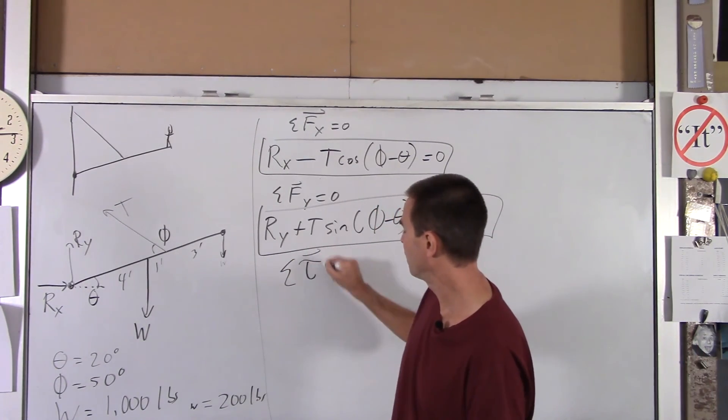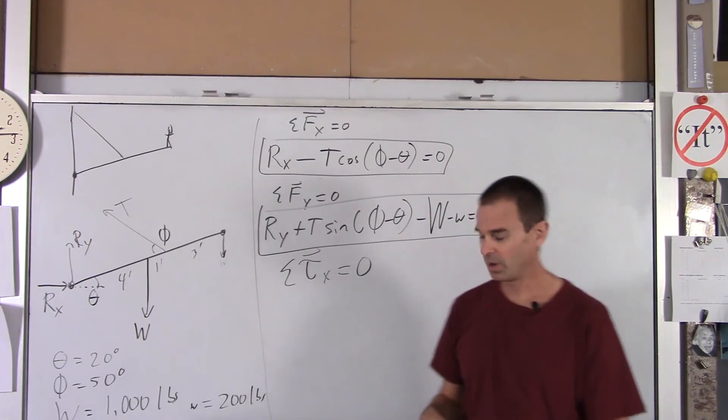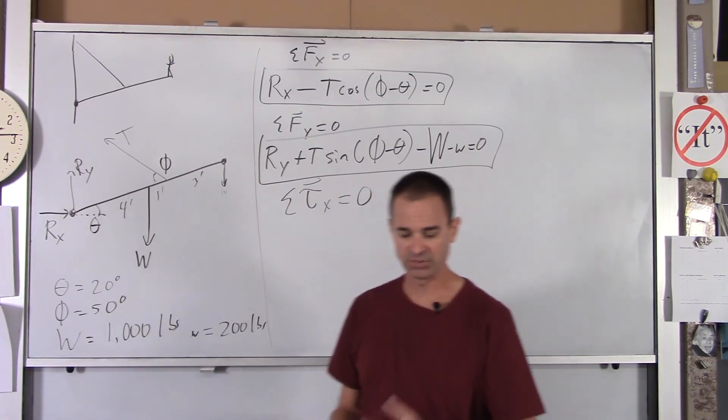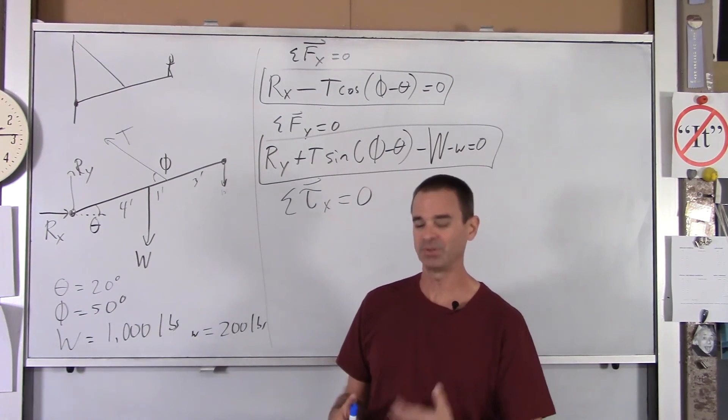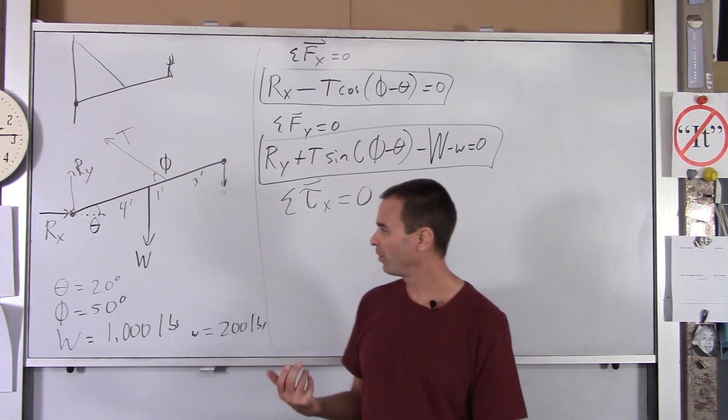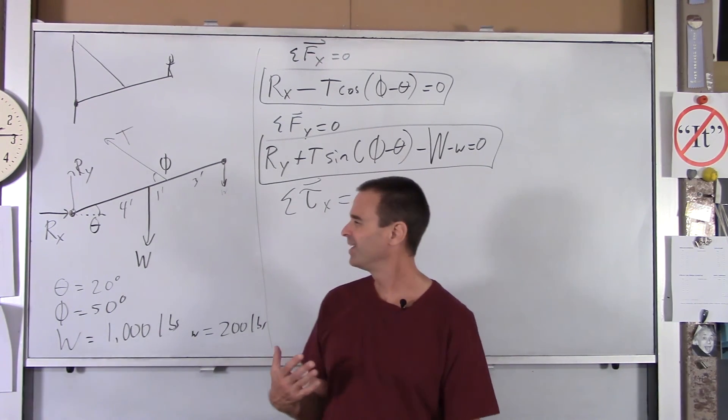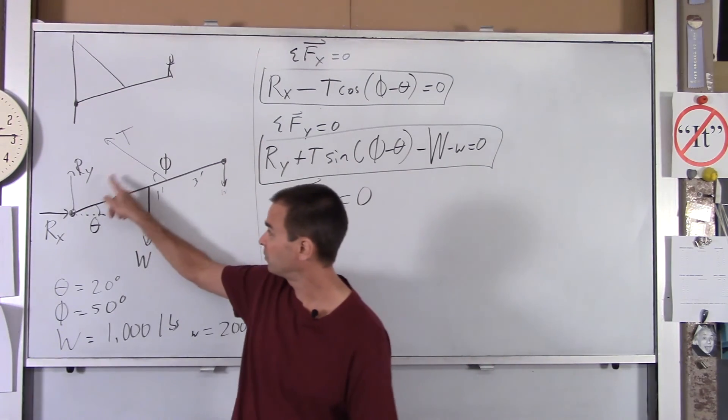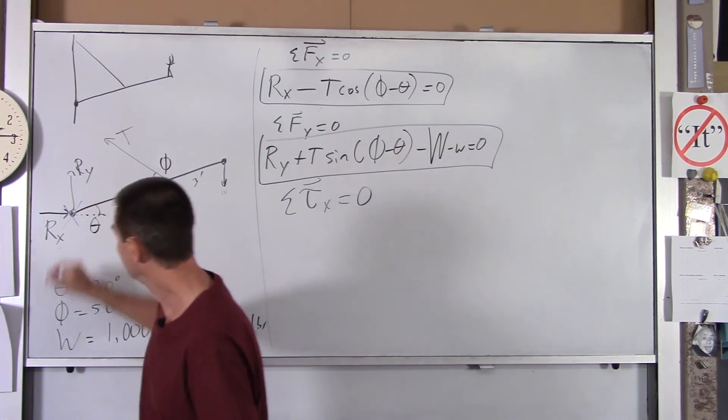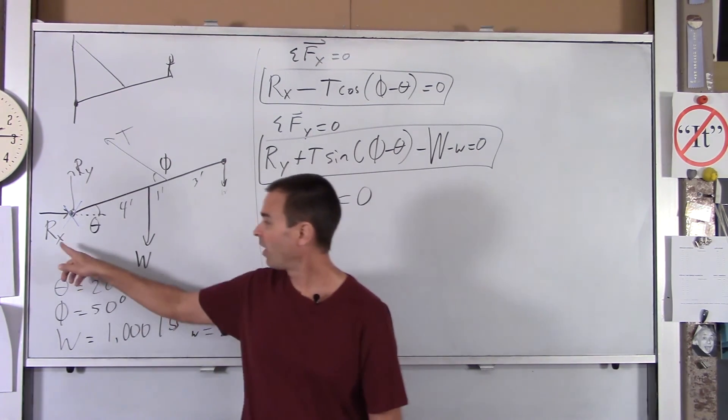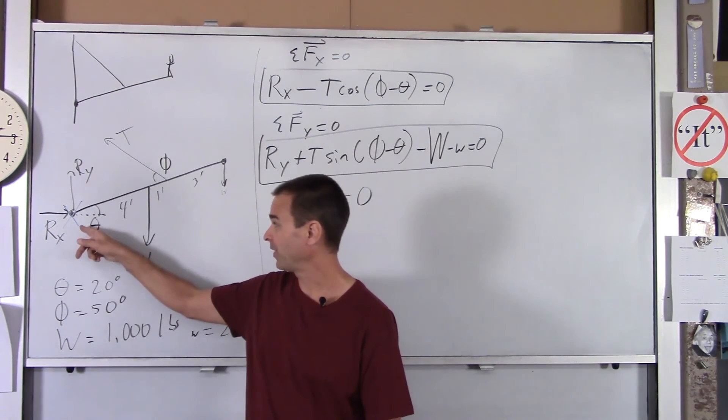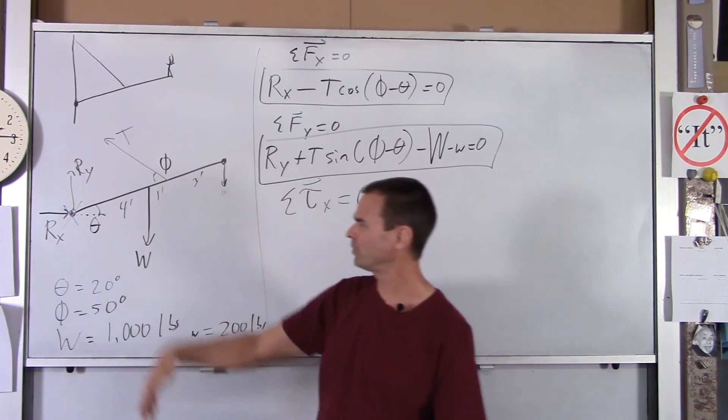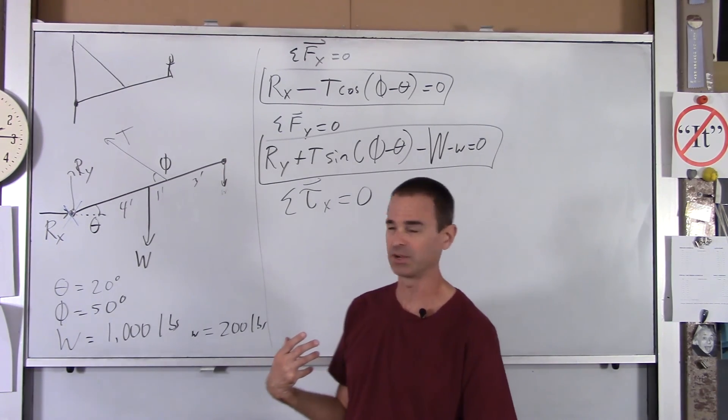So now we've got to do net torque about some axis equals 0. Now you can pick any axis you want to study torque about, and it wouldn't matter which one. You'd get the same three unknowns. You'd have three equations you could solve. In this example, as with most of them, you typically, just to make your life easier, you want to pick an axis through which as many unknowns go through it as possible. So for our three unknowns, tension, Ry and Rx, I'm going to pick this point. That's going to be our axis. Because then, Rx and Ry, they don't cause torque about that point. So we don't have to worry about them anymore. So it turns out, once you make an equation for net torque about that point, the only unknown you're going to have is tension. So we're going to actually be able to solve for tension directly here.